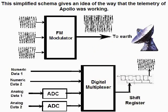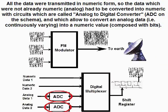This simplified schema gives an idea of the way that the telemetry of Apollo was working. All the data were transmitted in numeric form. So the data which were not already numeric — analog — had to be converted into numeric with circuits which are called analog-to-digital converters on the schema.